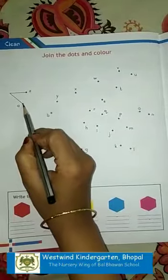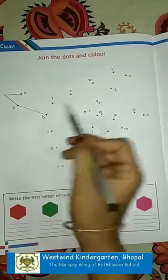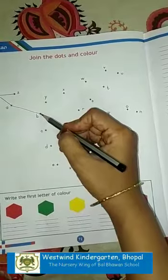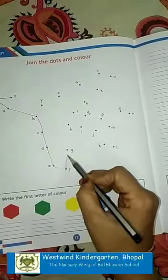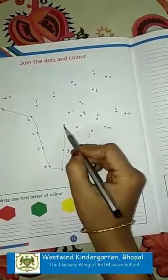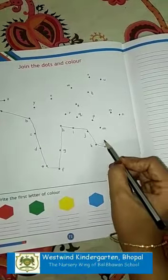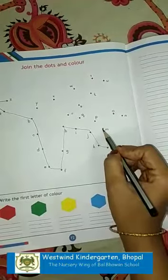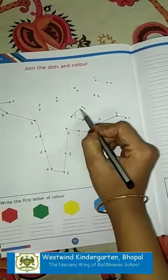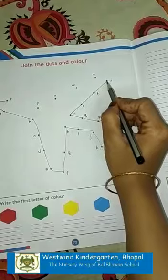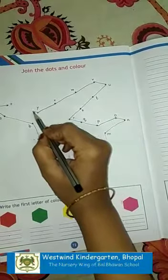Identify the letter. Which letter is this? A. What comes after A? B. We are going to join like this. After B: C, D, E, F, G, H, I, J, K, L, M, N, O, P, Q, R, S, T, U, V, W, X, Y, and Z.